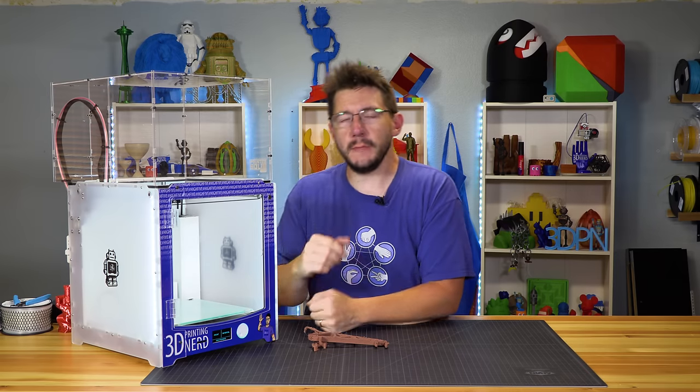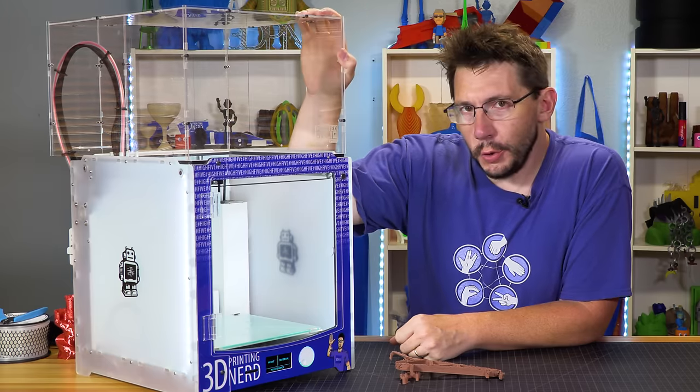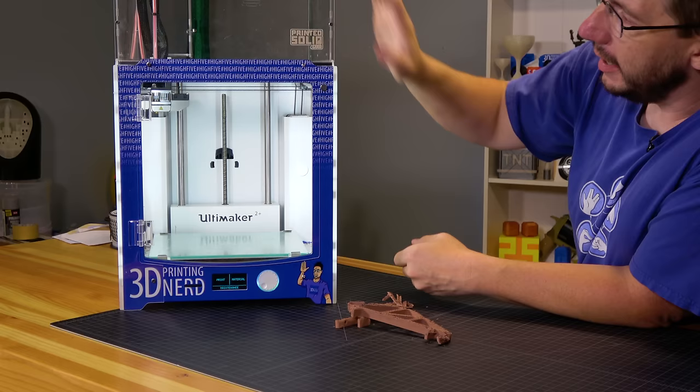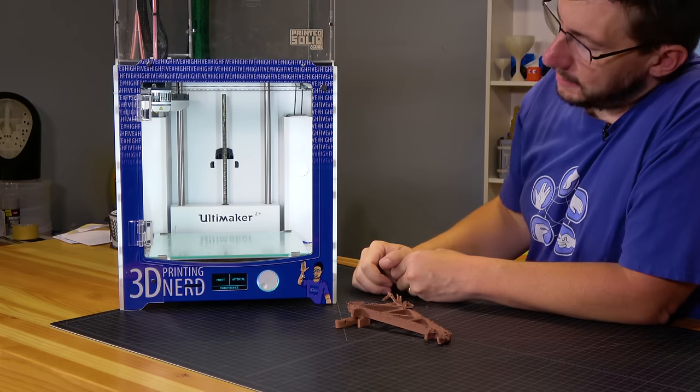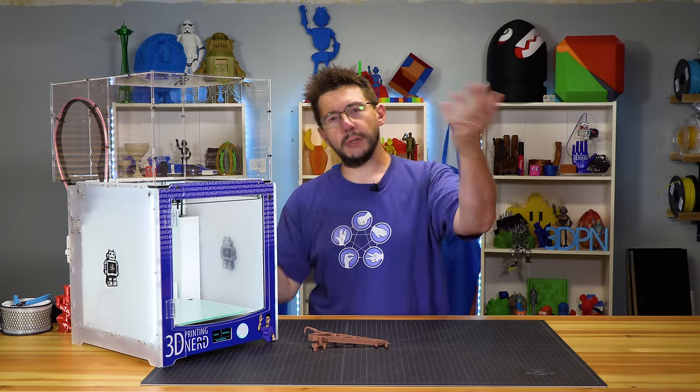This is the Ultimaker 2 Plus, a wonderful machine. I've got a sweet enclosure from Printed Solid on top so I can print ABS in Antarctica while I frolic with penguins, and on the front is this incredibly good-looking custom plate by Apyro Design. All of these are available, of course I will put links in the description.